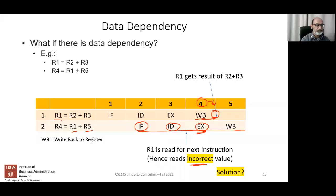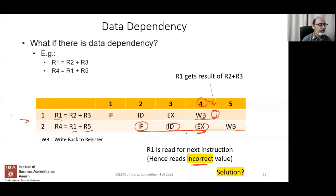A student suggests using an intermediate register to store r1's computed value so instruction 2 can read from it instead of waiting. The proposed sequence: instruction 1 computes r1 = r2 + r3; instruction 2 copies r1 into r6; instruction 3 computes r4 = r6 + r5.